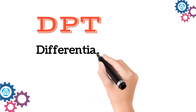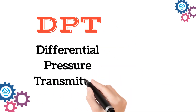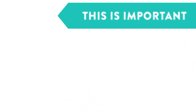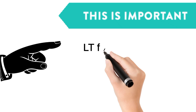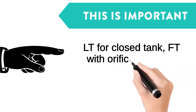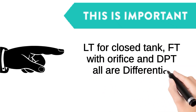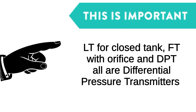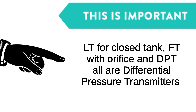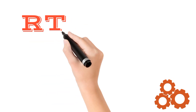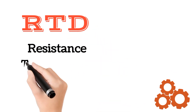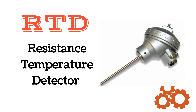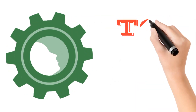DPT means differential pressure transmitter. DPT measures the pressure at two different points. One important point to note: LT is used for closed tanks, FT is used with an orifice plate, and DPT — all are differential pressure transmitters.